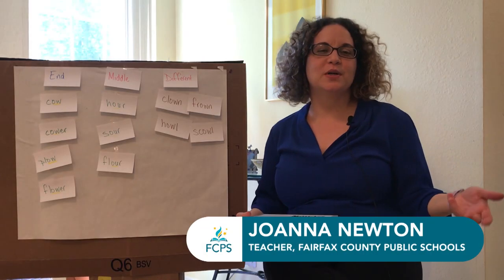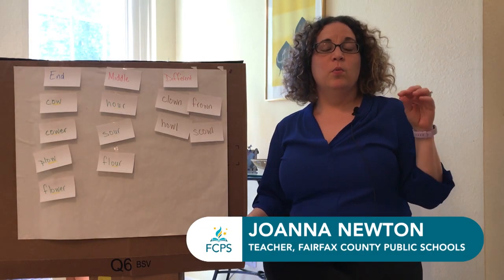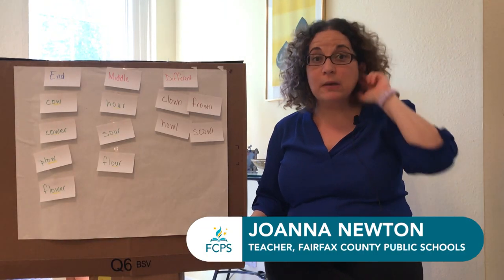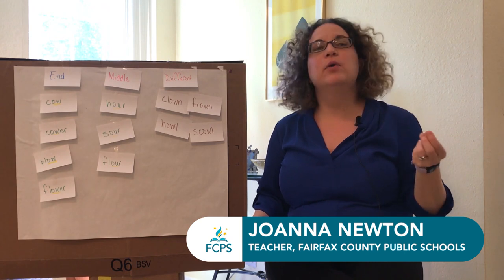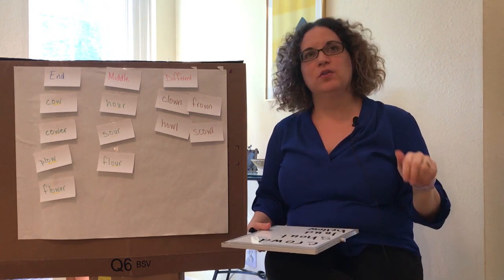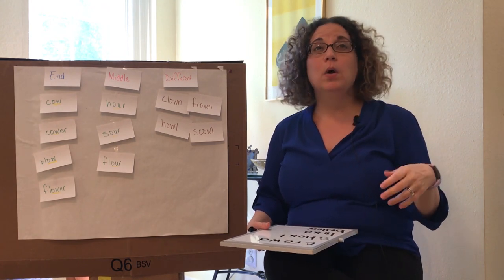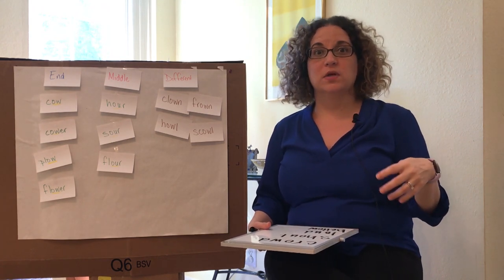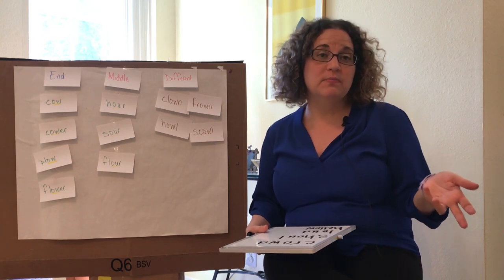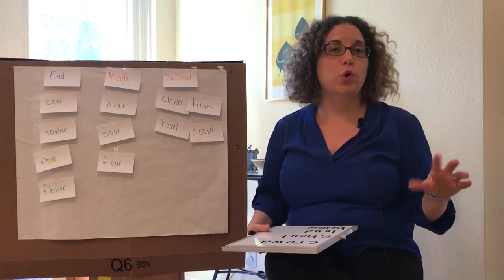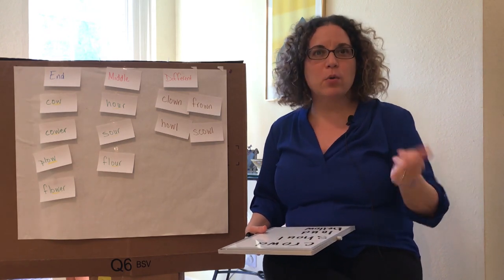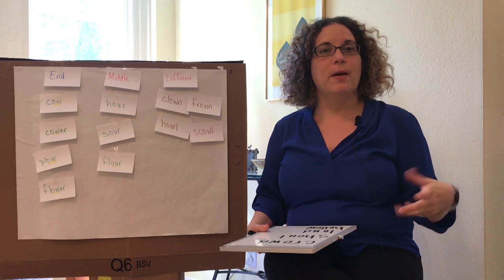Today we're going to explore words with the pattern OW. You might remember that OW can be made with O-W like in the word 'cow' or in the word 'tower,' and it can also be made with the letters O-U like in the words 'sour' and 'about.'